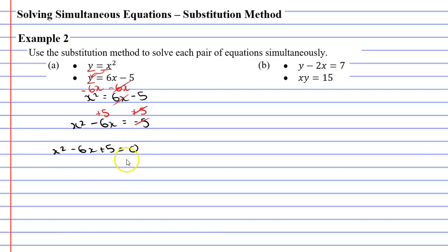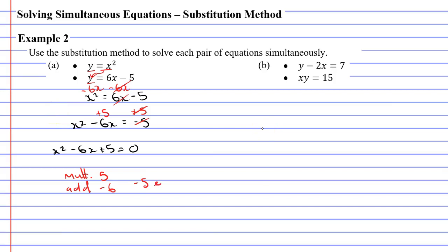There are two methods to solve this quadratic equation: factorize or use the quadratic formula. I get the feeling I'll be able to factorize this quite easily. I'm looking for two numbers that multiply to make 5 — because the constant term at the end is 5 — and that add to make negative 6, because the middle term has a negative 6 in it. The answer is negative 5 and negative 1: negative 5 plus negative 1 makes negative 6, and negative 5 times negative 1 makes 5.